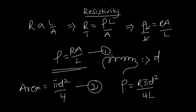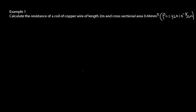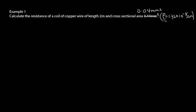Let's look at some examples to appreciate what we are talking about with resistivity. Example number one: calculate the resistance of a coil of copper wire of length two meters and a cross-sectional area of 0.04 millimeters squared.